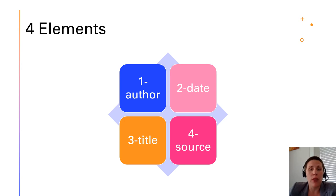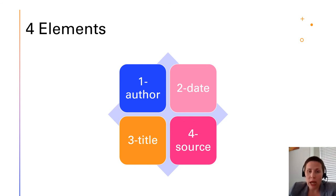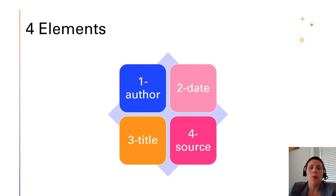If you have a month or a day, month, and year, include all of that — for instance: 2020, July 19. If you don't have a date at all, you might want to question the source's reliability. But you can also include the abbreviation N.D., which stands for no date.